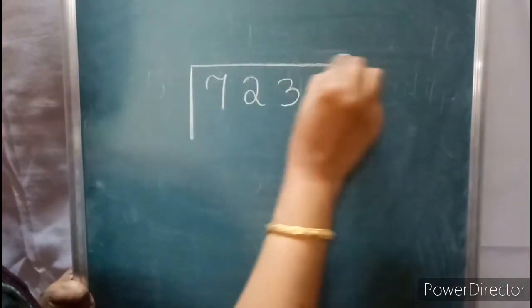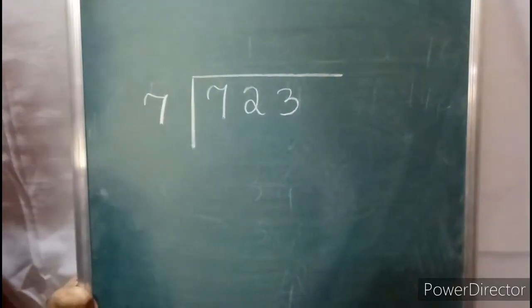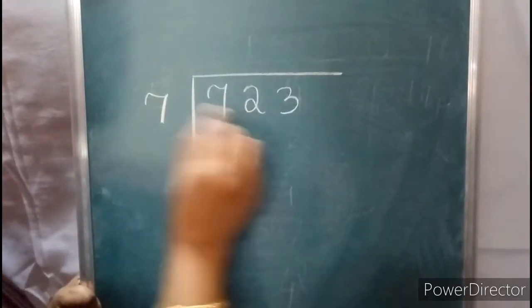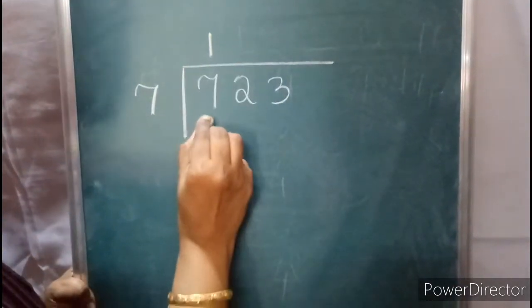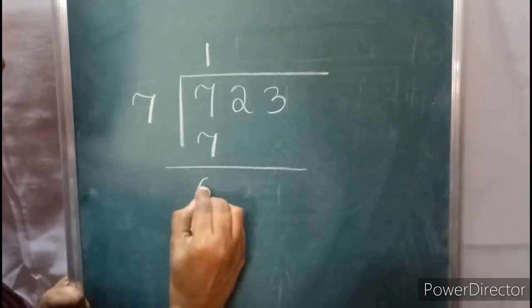723 divided by 7. In the 7 table, 7 times 1 is 7. So 7 into 1 is 7, subtract to get 0.